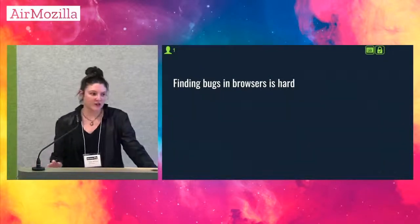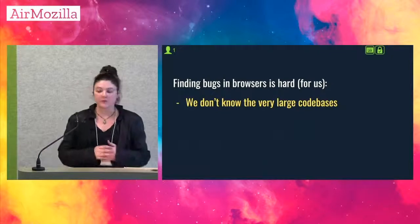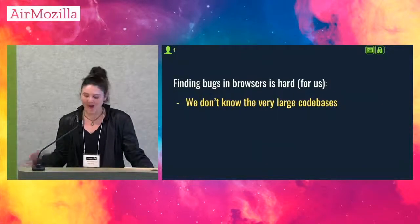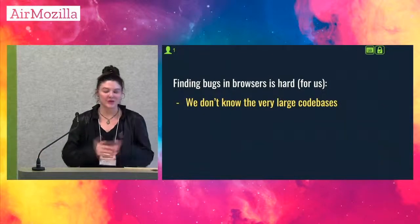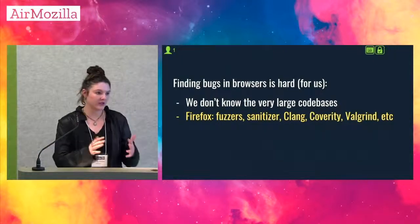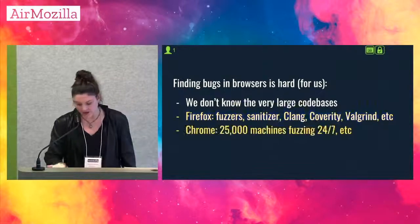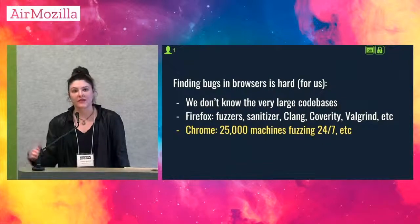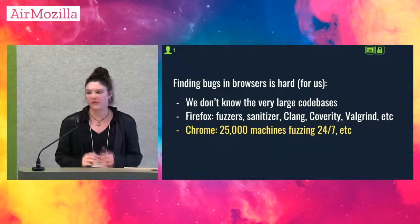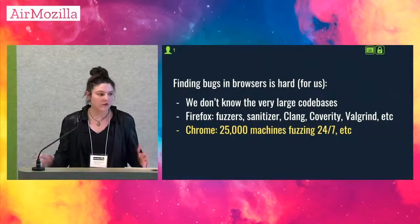But finding bugs in browsers is pretty hard, because we don't really know these code bases and they're really, really big. More surface area for bugs, but it means some tools just can't scale. Also, you're already using all the automatic tools that do scale: fuzzers with sanitizers attached, static analyzers like Clang and Coverity, dynamic tools like Valgrind. One statistic I think is just insane is that Chrome has 25,000 machines fuzzing with sanitizers attached every day. So as a result, a lot of the low-hanging fruit bugs — the bugs that are really easy to find with automatic tools — have already been found and patched.